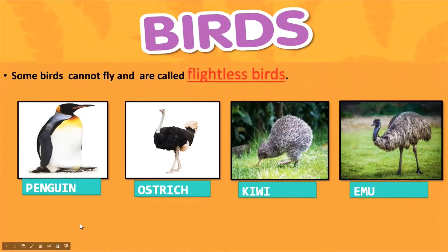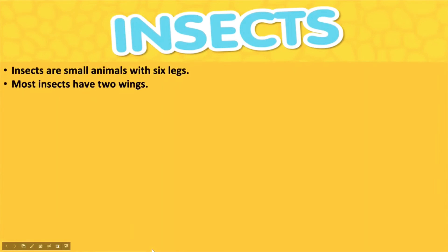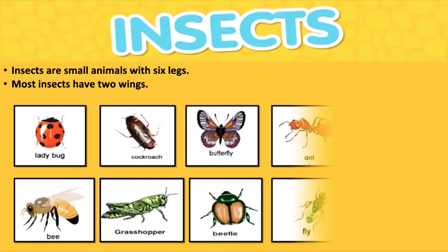The penguin, ostrich, kiwi, and emu are called flightless birds because they cannot fly. They cannot fly because of their heavy bodies.